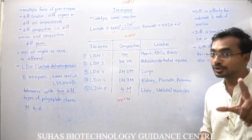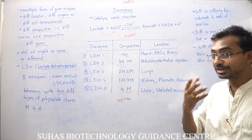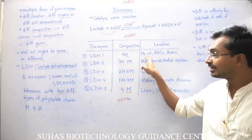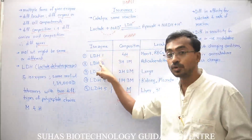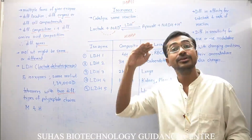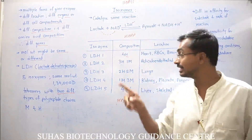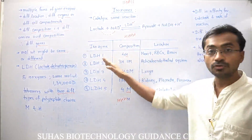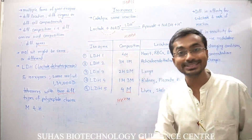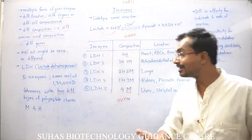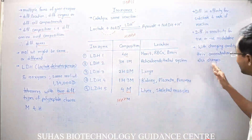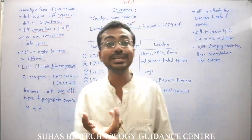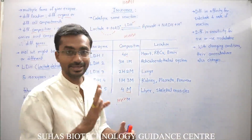These different LDH isozymes are identified in different diseases because with changing conditions their concentration in organs may change. Especially in heart diseases, it is observed that LDH1 quantity and concentration decreases in the heart, which is an indication of heart disease. Many such diseases can be identified because of the changing concentrations of LDH.